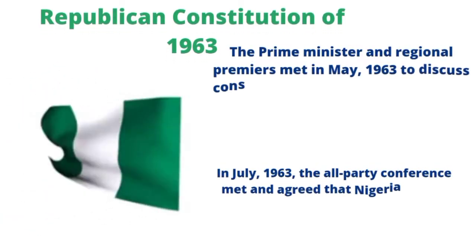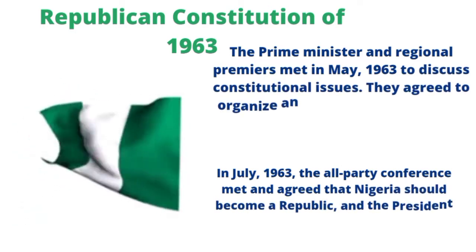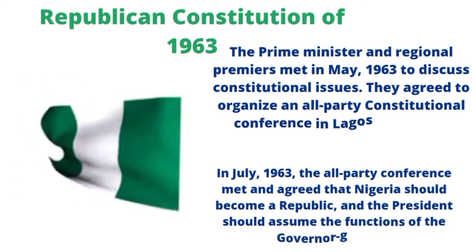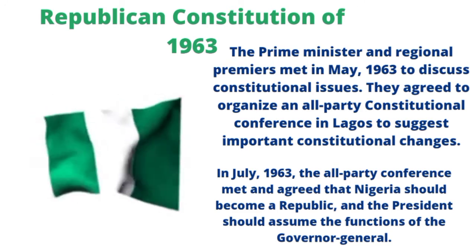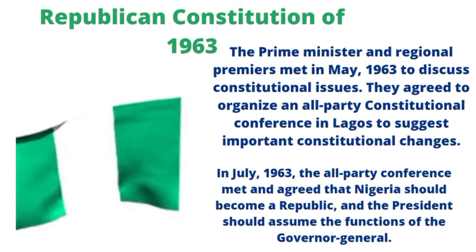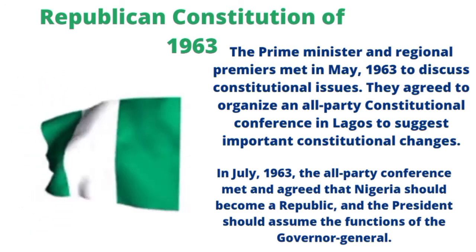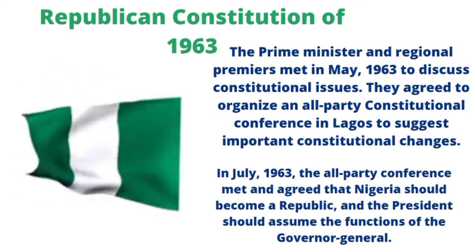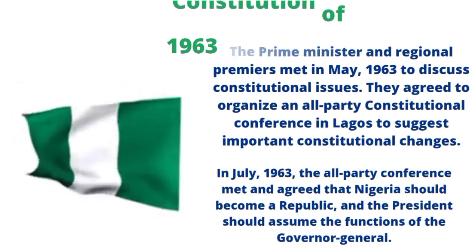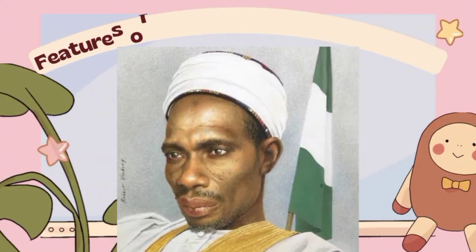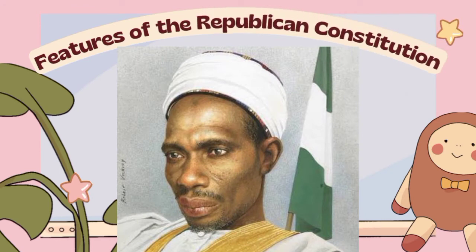Now, what is the Republican Constitution of 1963 all about? The prime minister and the regional premiers met in May 1963 to discuss constitutional issues and agreed to set up an all-party constitutional conference. This conference held in June 1963 and came up with what became the Republican Constitution of 1963, making provision for the president and the prime minister.